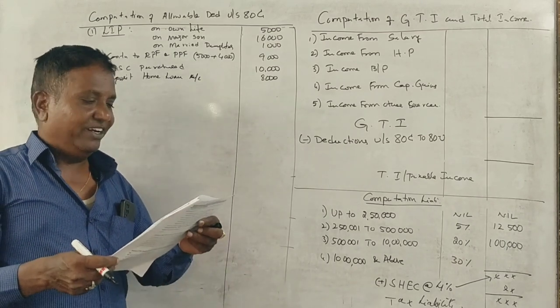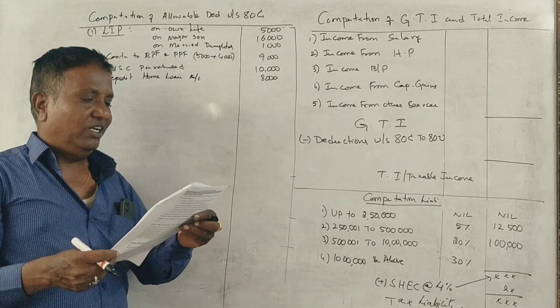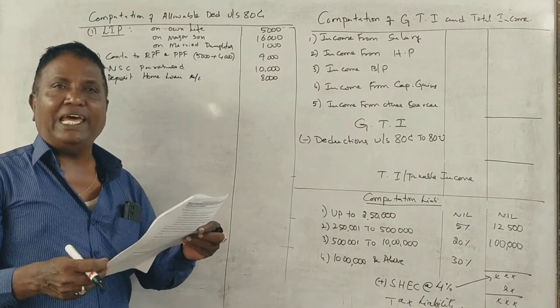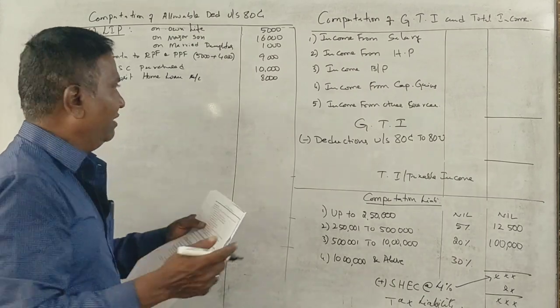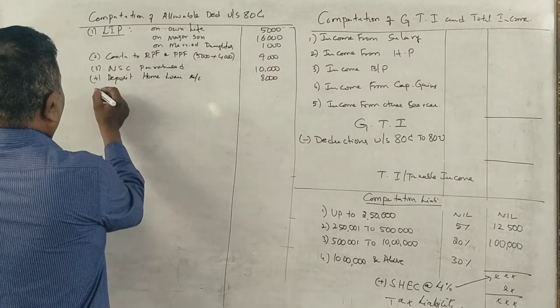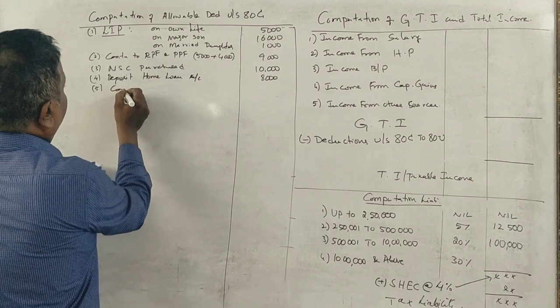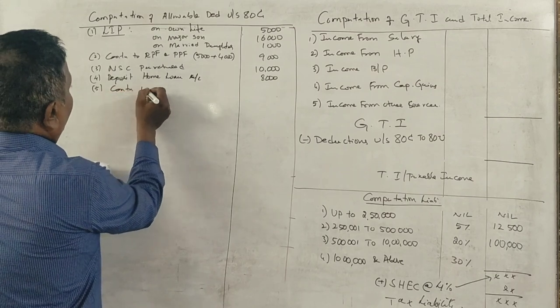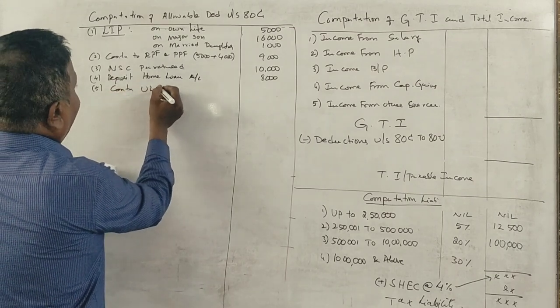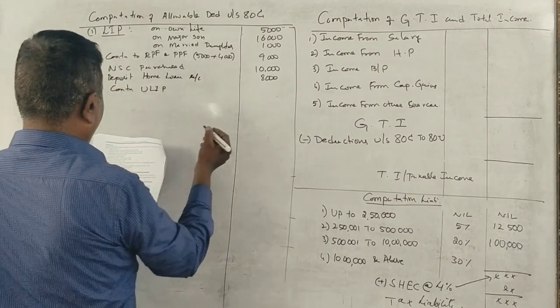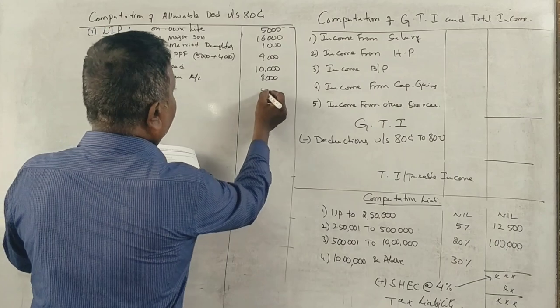Next is contribution to ULIP — contribution to Unit Linked Insurance Plan: 5,000.